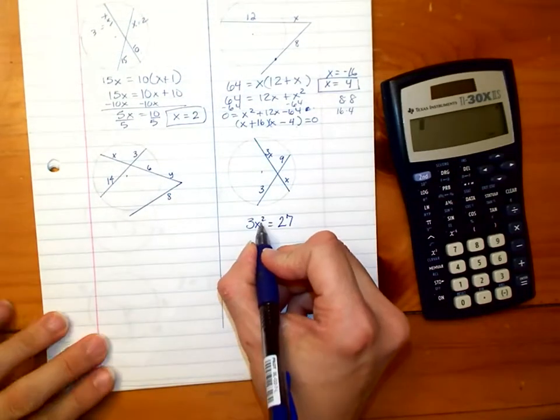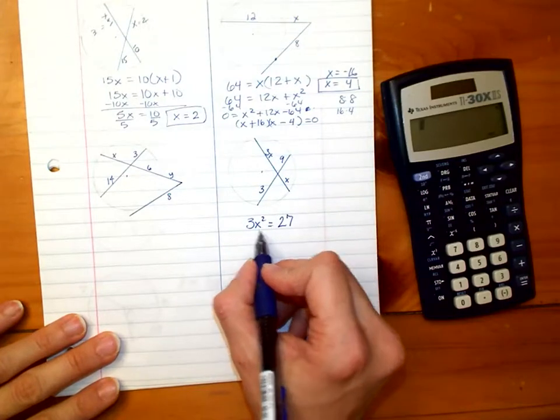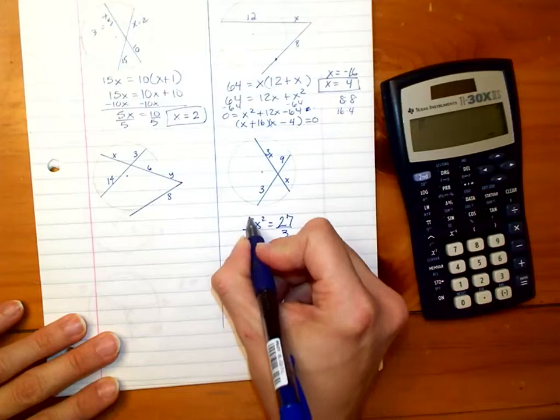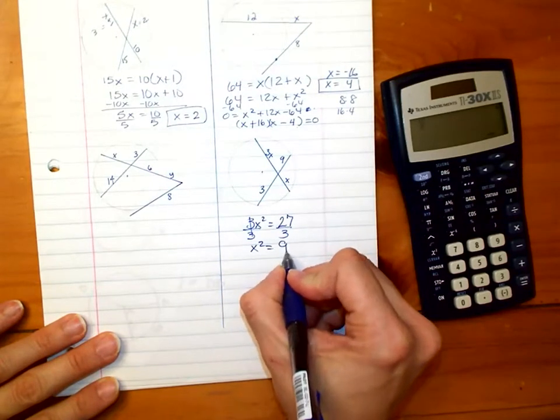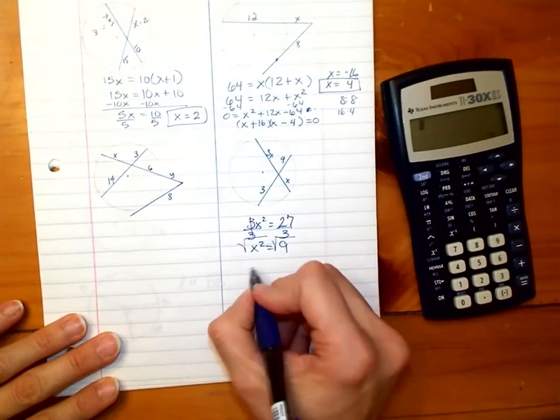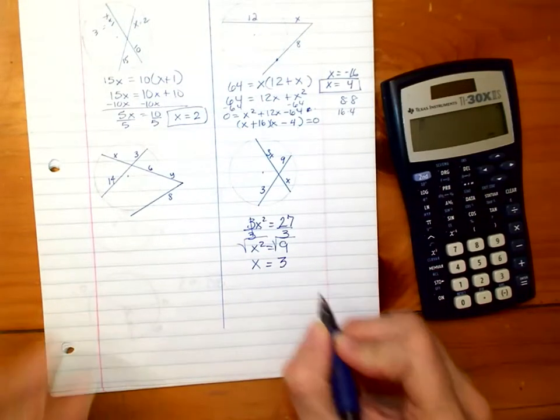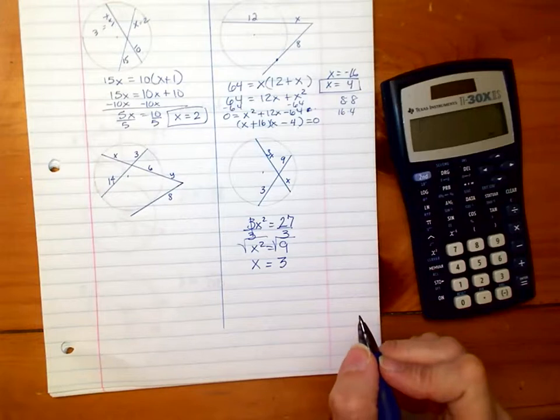And it's a quadratic equation, but it doesn't have an X term, a linear term, so we can use square roots, which means we get X squared all alone by dividing by 3. We get X squared equals 9, and we just square root both sides. And we would get X equals plus or minus 3, but again, we ignore the negative because lengths can't be negative.